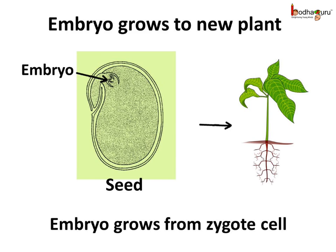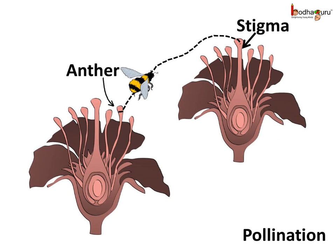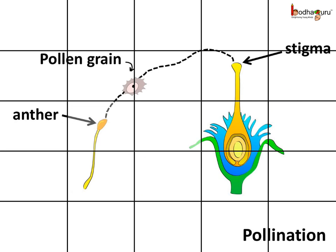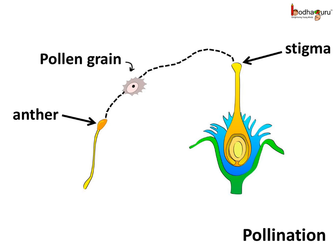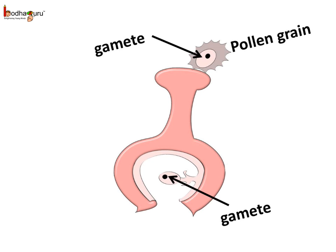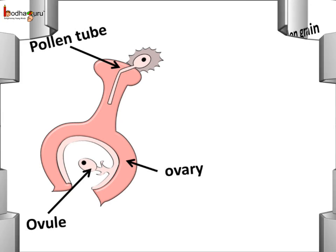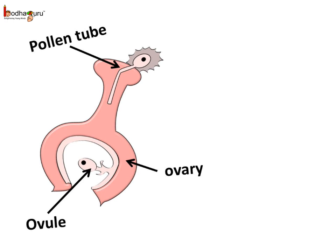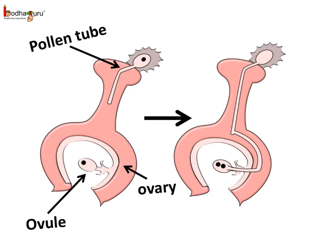Let us see how the zygote is formed starting from the beginning. A bee came and dropped the pollen grain on the stigma, and thus pollination is done. The pollen grains need to be transferred to the stigma because the pollen grains consist of one kind of gamete cell, and another kind of gamete resides inside the ovules. If the pollen lands on the stigma of the right type of flower, the stigma secretes some nutrients. The pollen grain absorbs these and starts growing — a thin tube grows out of the pollen grain, carrying the male gamete, and it grows until it reaches the ovary, enters inside an ovule, and releases the male gamete inside it.